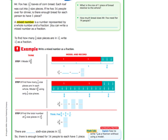We're going to get right into the problem using the model that they want us to use, and then I'll teach you how to do it without a model. It says, Mr. Fox has 2 and 3/6 loaves of cornbread. Each loaf was cut into 1/6 size pieces. If he has 14 people for dinner, is there enough bread for each person to have one piece?